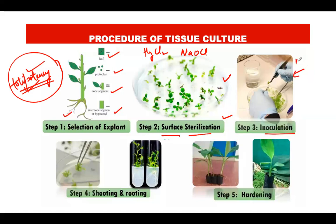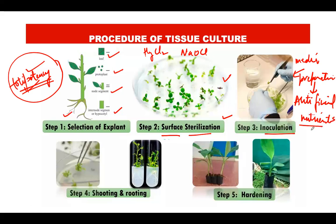The third step is inoculation, which also involves media preparation. Media preparation refers to preparing an artificial medium containing all the nutrients required for plant growth — just as soil provides nutrients in natural field conditions, the artificial medium supplies macronutrients, micronutrients, vitamins, and hormones under in vitro conditions. The sterilized explant is then inoculated into this artificial medium, after which the incubation process begins.